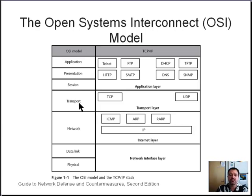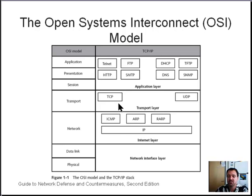Moving up to the transport layer — present in both the OSI and TCP/IP models — the transport layer is broken down into two different segments: TCP, Transmission Control Protocol, and UDP, User Datagram Protocol.